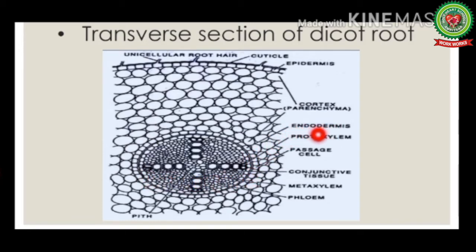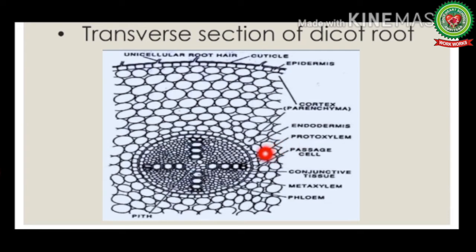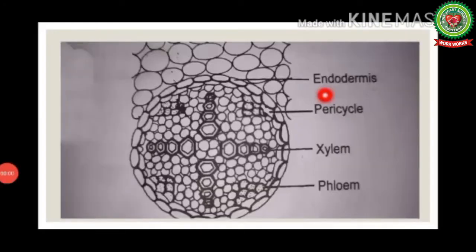The endodermis is the innermost layer of the cortex, one cell thick, forming a complete ring. It has barrel-shaped cells without any intercellular spaces. The lateral and radial cell walls have a thick layer of water-impermeable waxy coating of suberin.